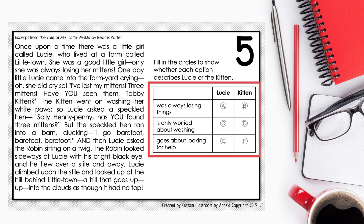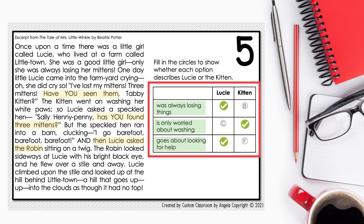Let's look back at the question and table. Fill in the circles to show whether each option describes Lucy or the kitten. Let's evaluate each option. First, 'was always losing things' — the passage shows that Lucy was always losing her mittens, so Lucy sounds like a good answer. Next, 'is only worried about washing' — the passage shows that the kitten went on washing, so the kitten sounds like a good answer. Finally, 'goes about looking for help' — Lucy goes and asks the kitten, the hen, and the robin for help, so Lucy sounds like the best option.